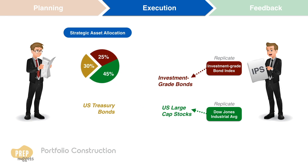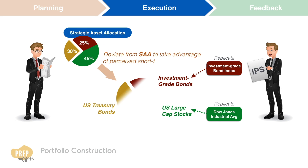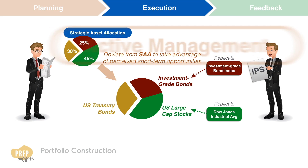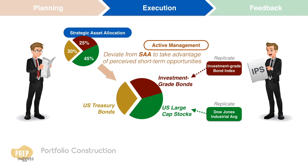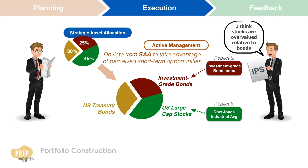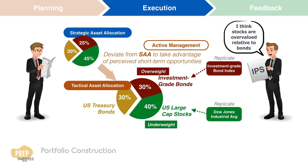Otherwise, if you deviate from the strategic allocation to take advantage of perceived short-term opportunities, you are said to be pursuing an active strategy. For example, if your analysis shows that stocks are overvalued relative to bonds, you may deviate from the strategic asset allocation by underweighting stocks and overweighting bonds in the short term. This is known as the tactical asset allocation.